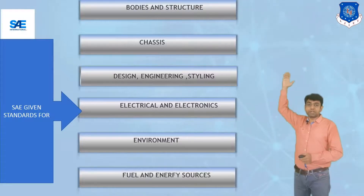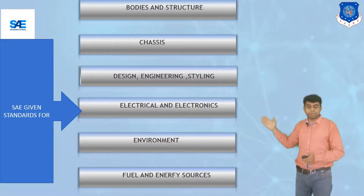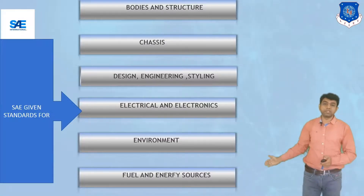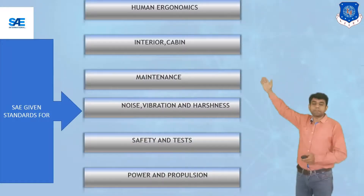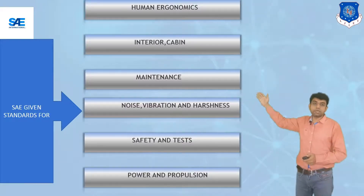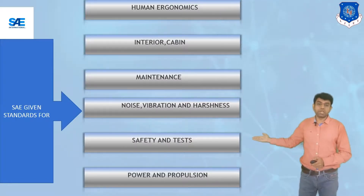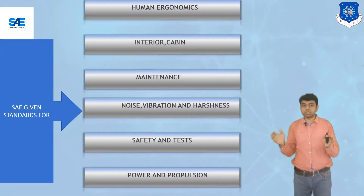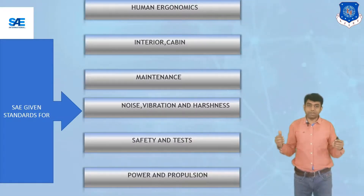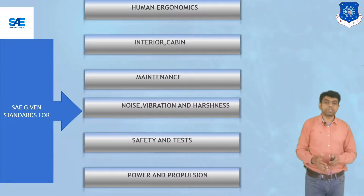SAE has given standards for bodies and structure, for the chassis, for design, engineering and styling, for electrical and electronic components, for the environment, for fuel and energy sources, for human ergonomics, the interior part of the car, the cabin part of the car, maintenance-related standards, NVH standards that is noise, vibration and harshness related standards, safety and test related standards — including the N-CAP test which we discussed, for which certain standards are required regarding dummy height and vehicle travelling speed. Such standards are also given by SAE norms, as well as standards for power and propulsion.